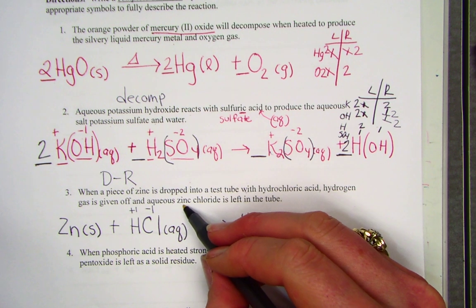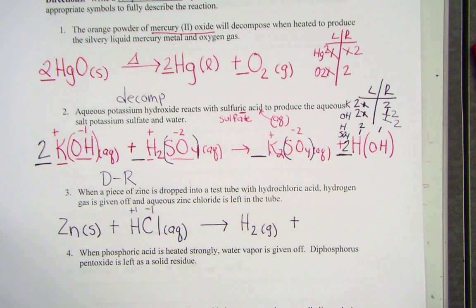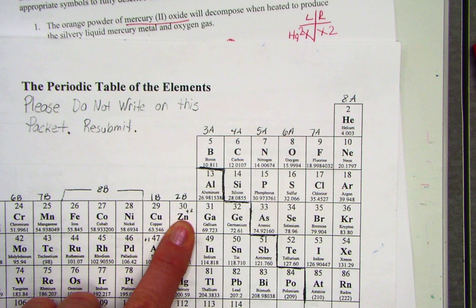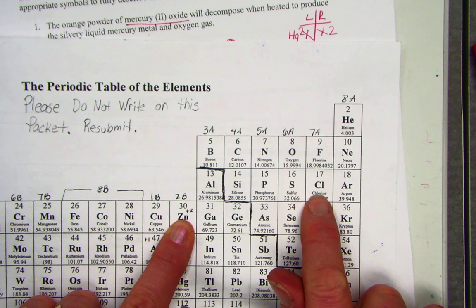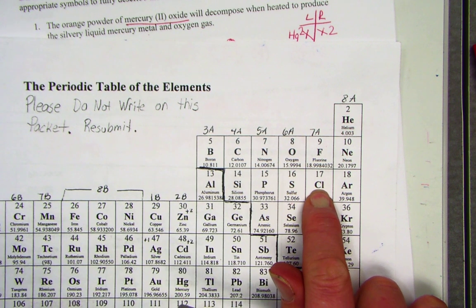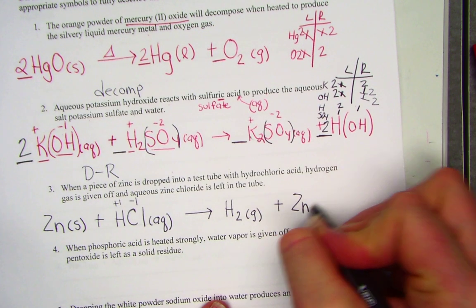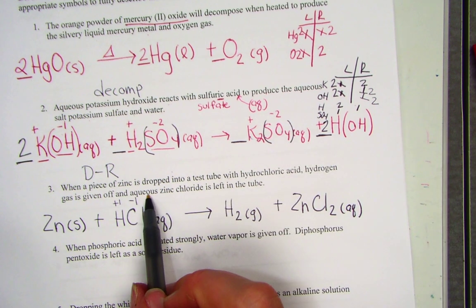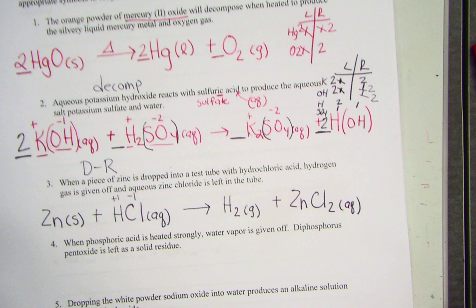An aqueous zinc chloride. Zinc, based on our periodic table, is a plus 2. We wrote that in the box. Chloride is a minus 1. So we're hooking plus 2 with a minus 1. And we come up with ZnCl2 aqueous. Again, aqueous zinc chloride left in the tube.